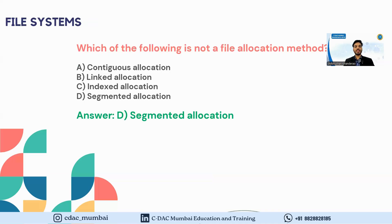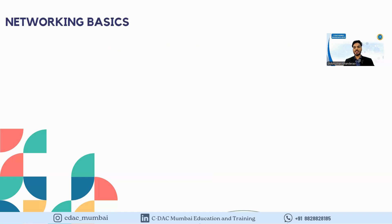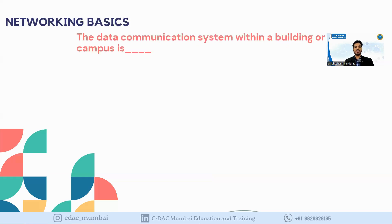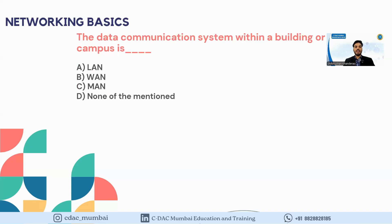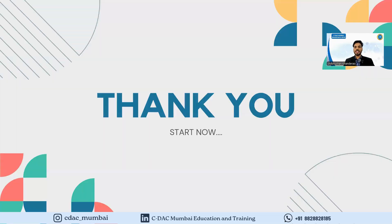For Network Basics, the question is: a data communication system within a building or campus is called what? The options are LAN, WAN, MAN, or none of the above. The correct answer is LAN, as communication within a building most commonly uses a Local Area Network.